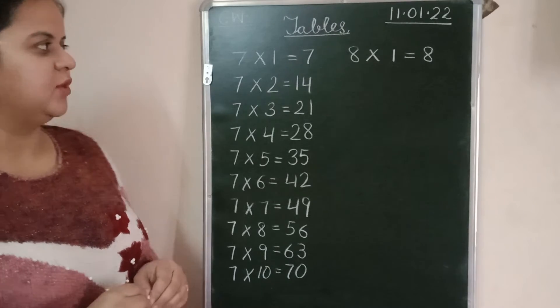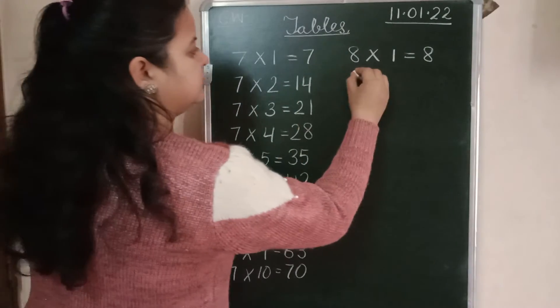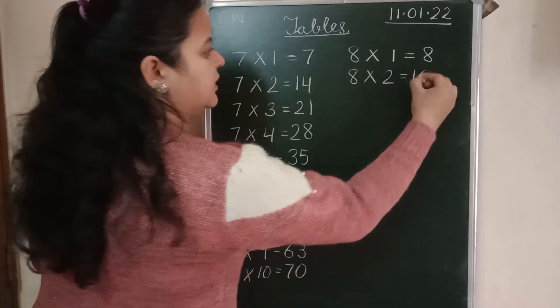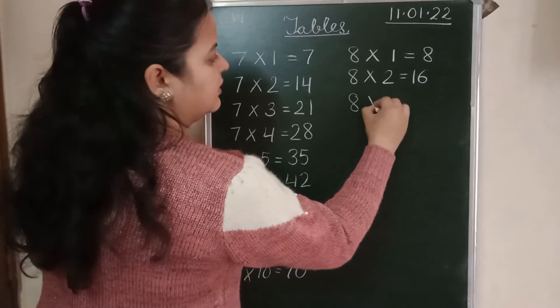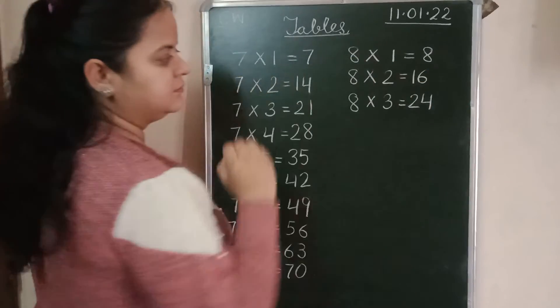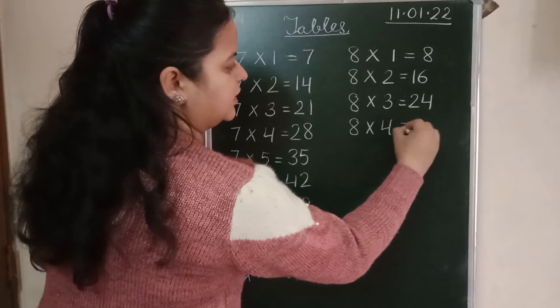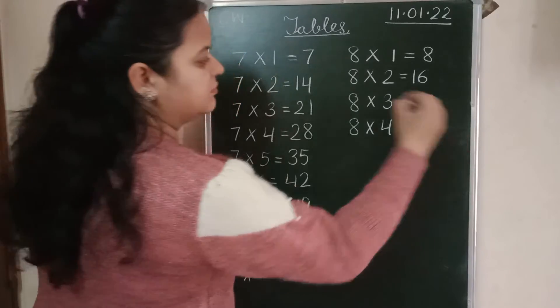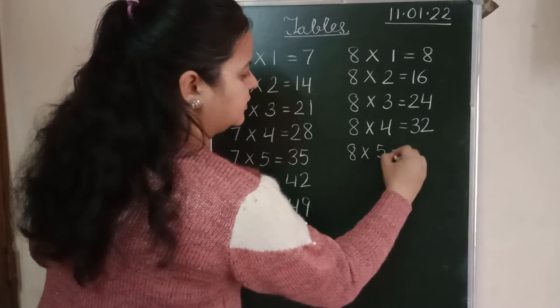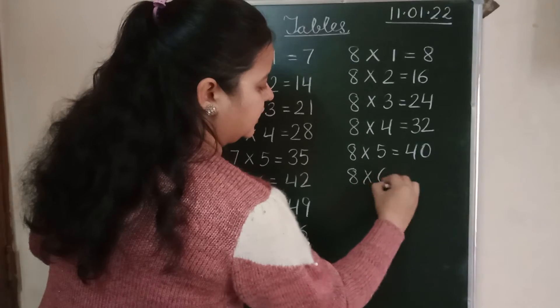Let's start the table of 8. 8-1s are 8. 8-2s are 16. 8-3s are 24. 8-4s are 32. 8-5s are 40. 8-6s are 48.